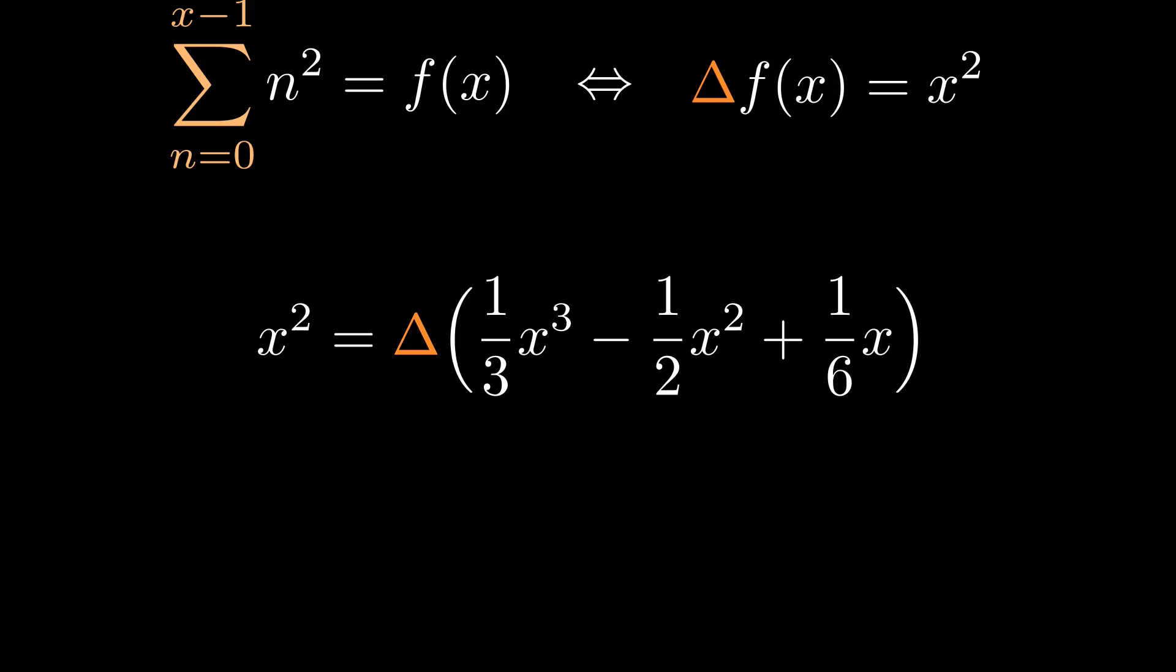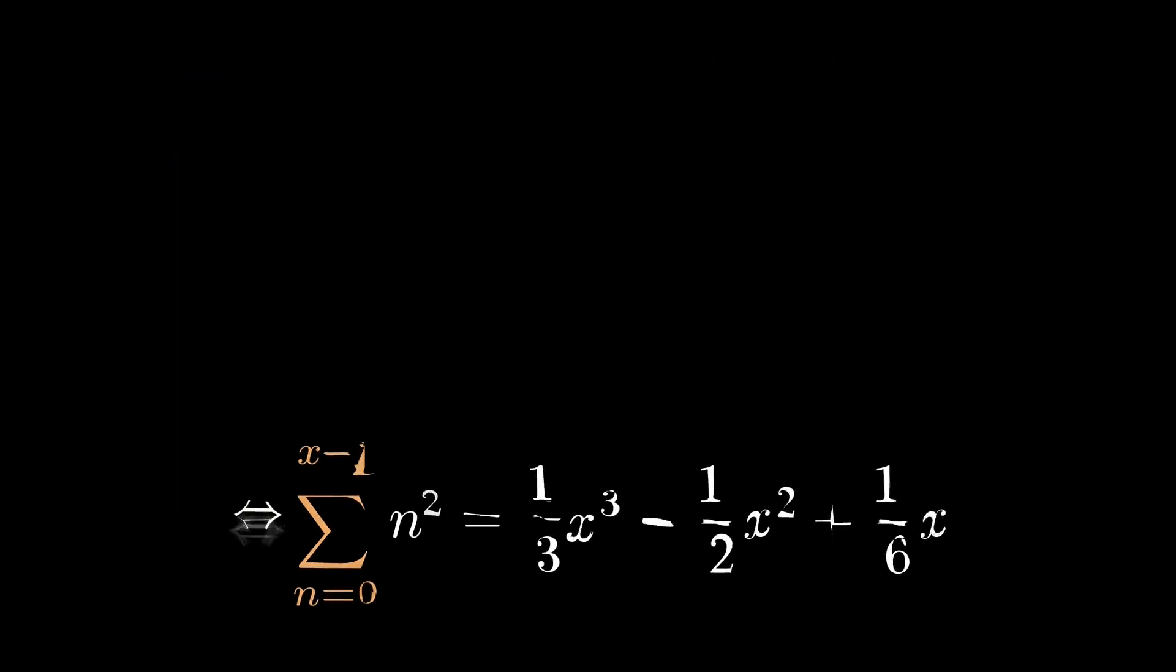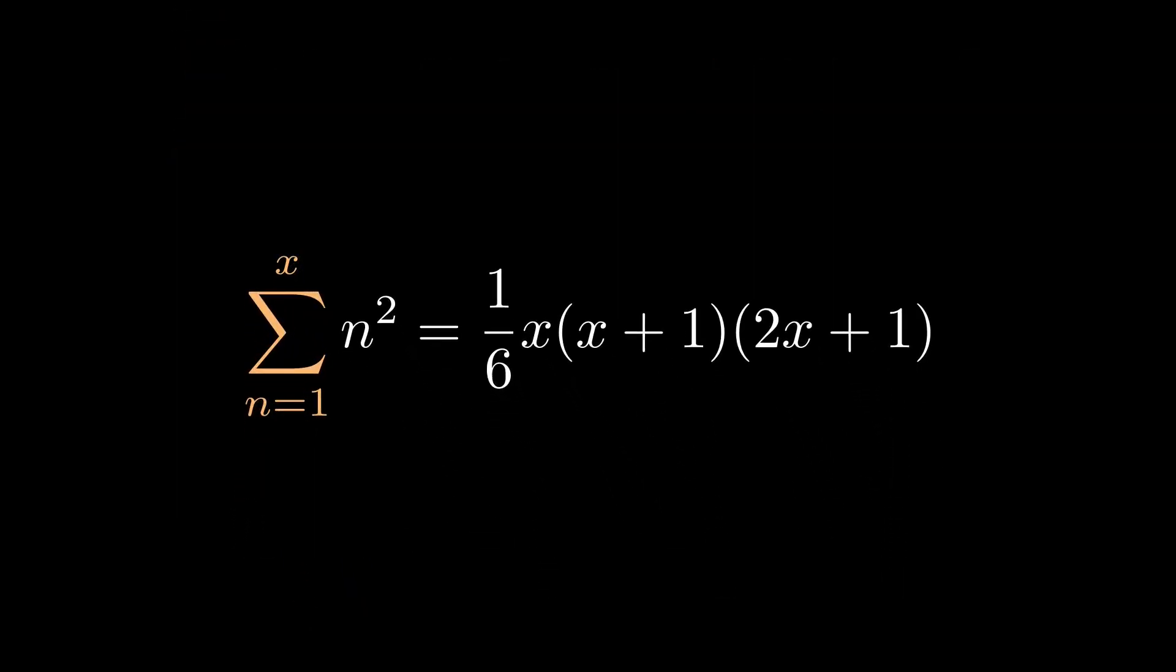And that's it! We're done! We found a function whose delta is x squared. In other words, we derived a summation formula for n squared, and we did it from scratch! If you spend a bit more time messing with this algebra, you end up with this famous formula that you've probably seen before.